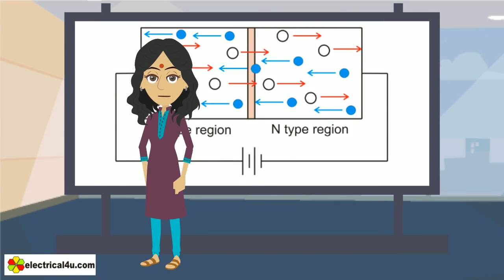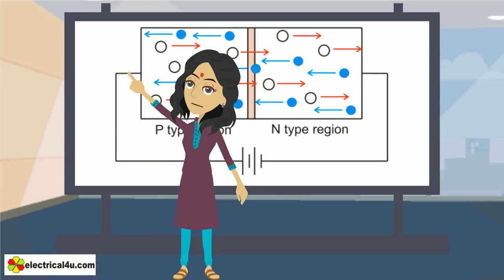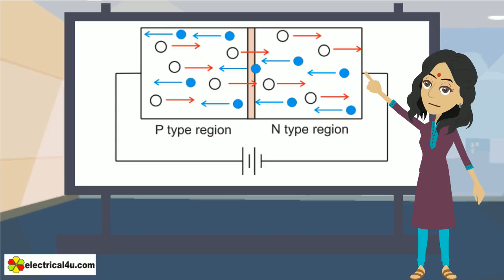When any diode is forward biased, current flows through the diode. In forward biased condition, positive terminal of battery is connected to P-type end, and negative terminal of battery is connected to N-type end of the diode.